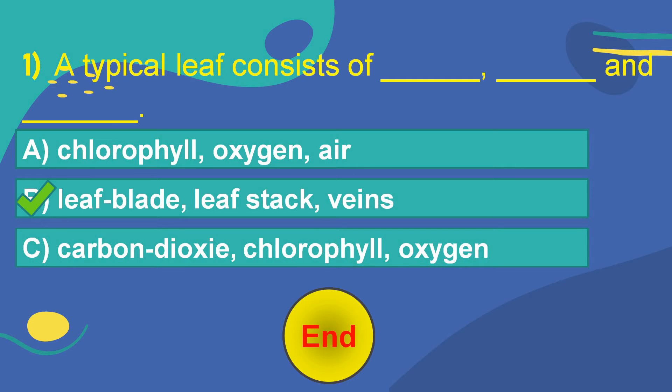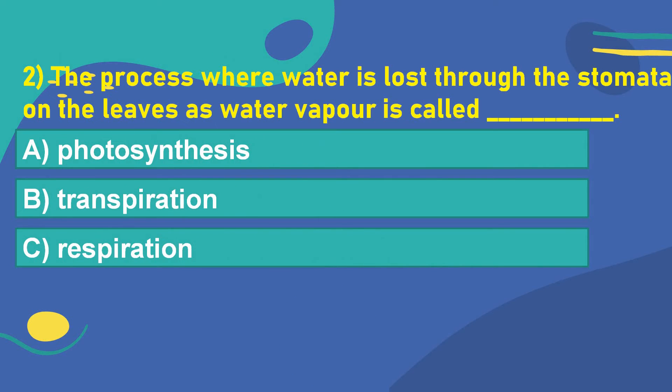Let's move on to the next question. The second question is: The process where water is lost through the stomata on the leaves as water vapor is called dash. Option A: Photosynthesis. Option B: Transpiration. Option C: Respiration.